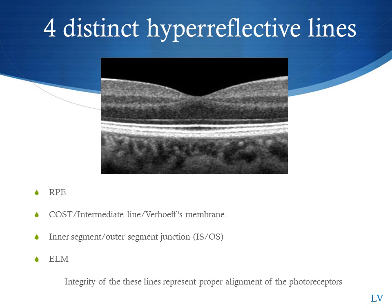The four hyperreflective structures you want to concentrate on, starting from the outer retina, are the retinal pigment epithelium, then your COS line or intermediate line, then your inner-outer segment line also called your ELLZ line, and finally your external limiting membrane. What you want to concentrate on most is the COS line and your inner-outer segment junction line. When those two are intact, it indicates the photoreceptors are aligned and the patient should have good visual acuity.